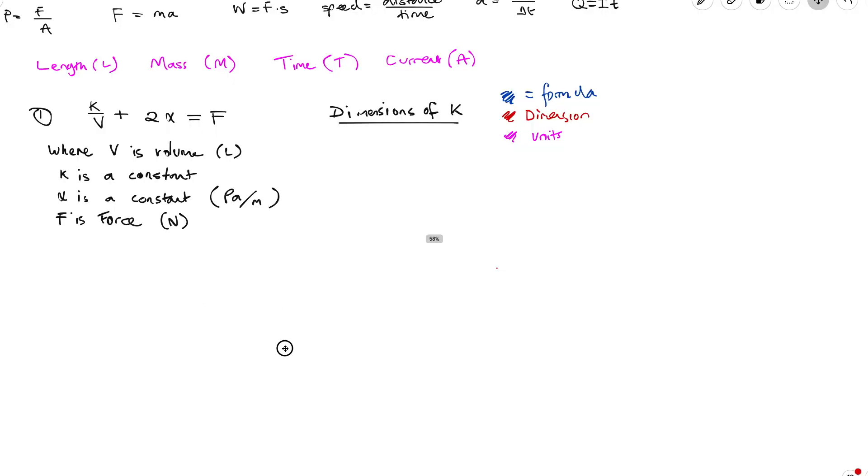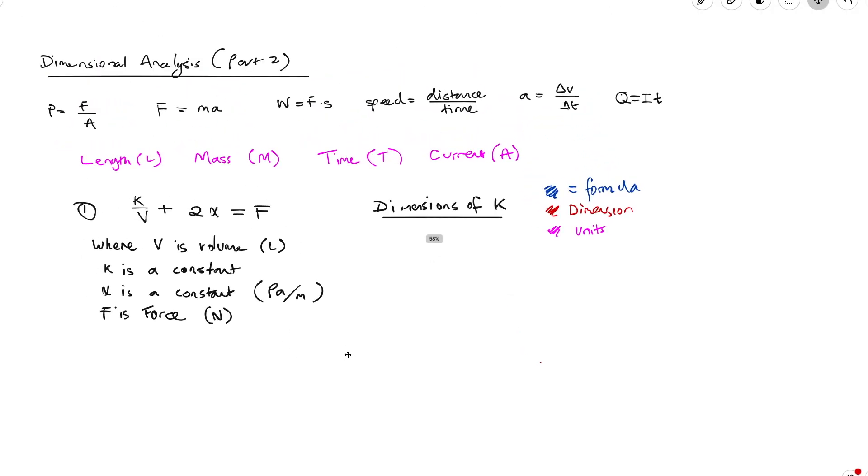Anyway, let's get into the dimensional analysis. Okay, so our goal with this video is to carry on from what we did in the first one. But in the first one, I only did simple examples with a single fraction that was equal to a variable, and then we just rearranged and solved the dimensions for the missing variable.